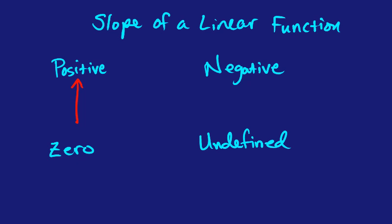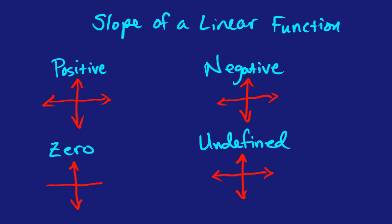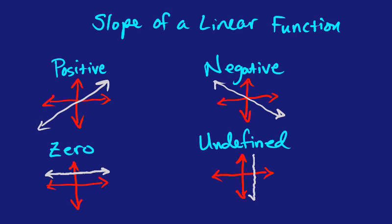Here is your coordinate plane — just a quick sketch. Linear functions are straight lines, and there are four potential types of slope. A positive slope line goes up, a negative slope line goes down from left to right, a slope of zero means it's flat with no rate of change, and undefined slope is a vertical line, which is not a function.